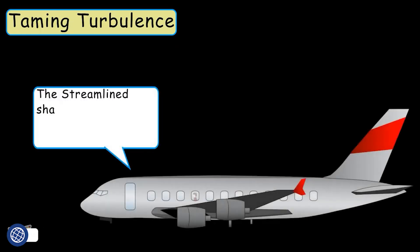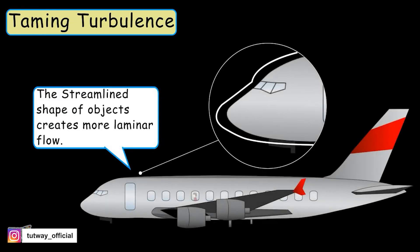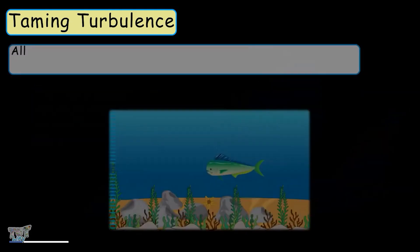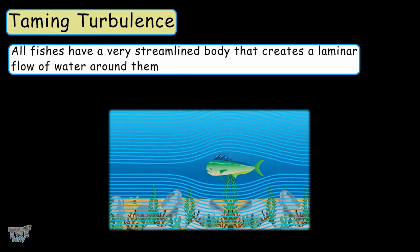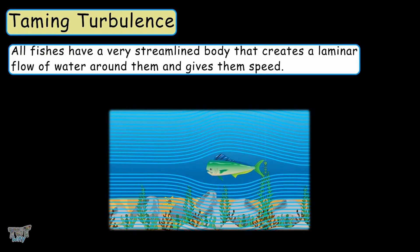The streamlined shape of objects creates more laminar flow. This is why all fishes have a very streamlined body which creates a laminar flow of water around them and gives them speed.